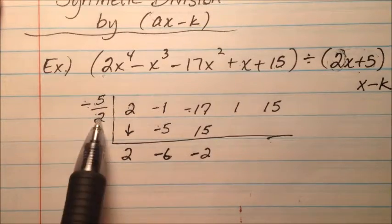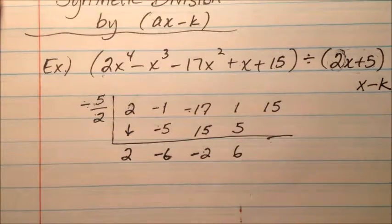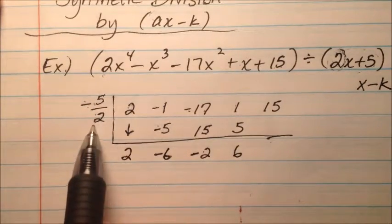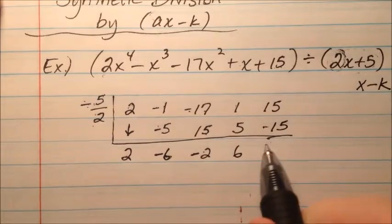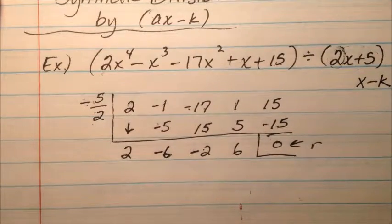Negative 17 plus 15 is negative 2. So again, the negatives cancel, the 2s cancel, so we have 5. So 1 and 5 is 6, and negative 5 halves times 6 is negative 15. So it looks like my remainder is 0, so it came out nicely.